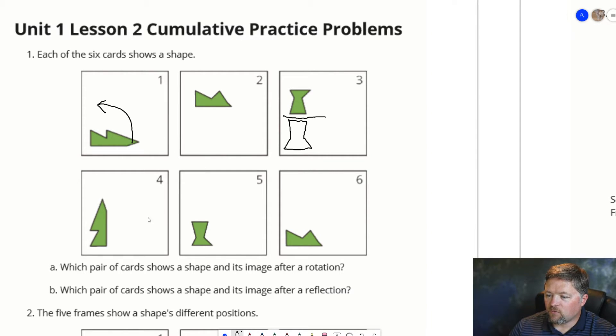So, 1 and 4 are a rotation. 3 and 5 are a reflection. Not part of the question, but what are 2 and 6? That looks like a translation. That was translated down.